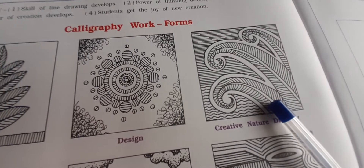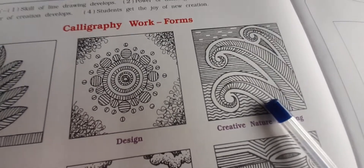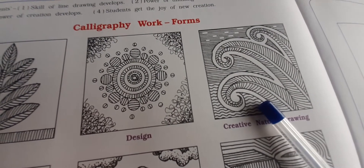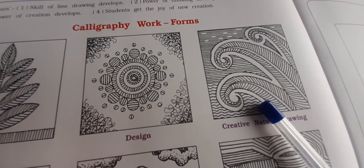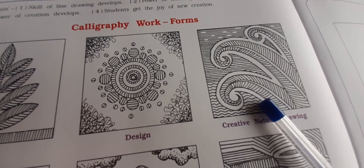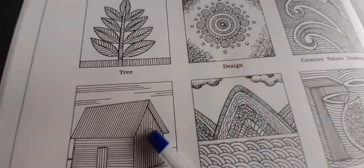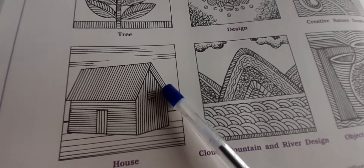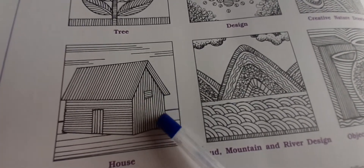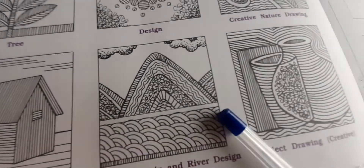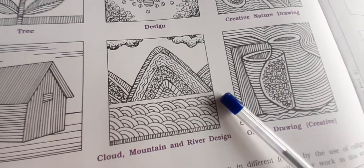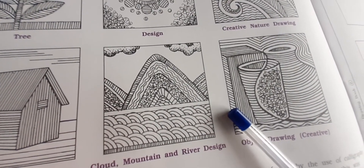You can draw the picture by practicing more and more. This is the house — this is the calligraphy form. This is the hillside — cloud, mountain and river design.